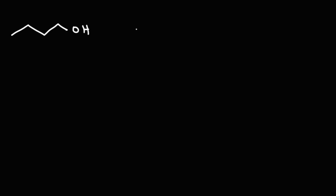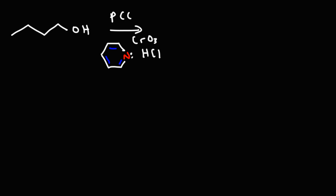Let's go over some reagents you want to be familiar with. If we have 1-butanol and we want to react it with PCC — pyridinium chlorochromate — PCC looks like this: you have pyridine, which is basically a benzene ring with a nitrogen inside of it, hydrochloric acid, and chromium trioxide. That complex makes up PCC. PCC is a mild oxidizing agent; it'll convert a primary alcohol to an aldehyde.